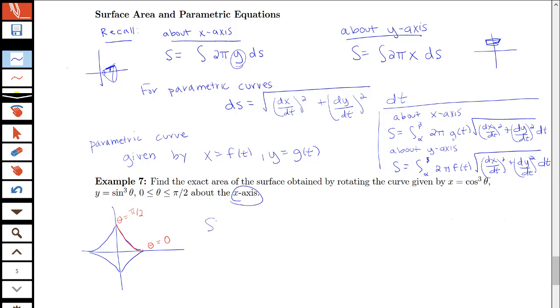So we're going to have our surface area equal to an integral from 0 to π/2 of 2π times that vertical radius component. So that will be our sine cubed θ, the y component.